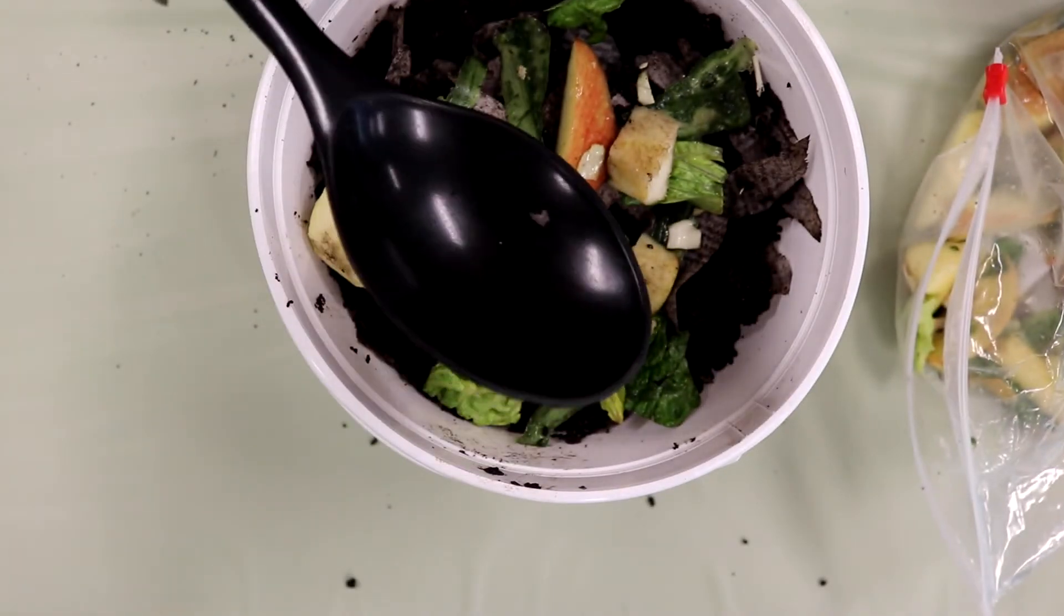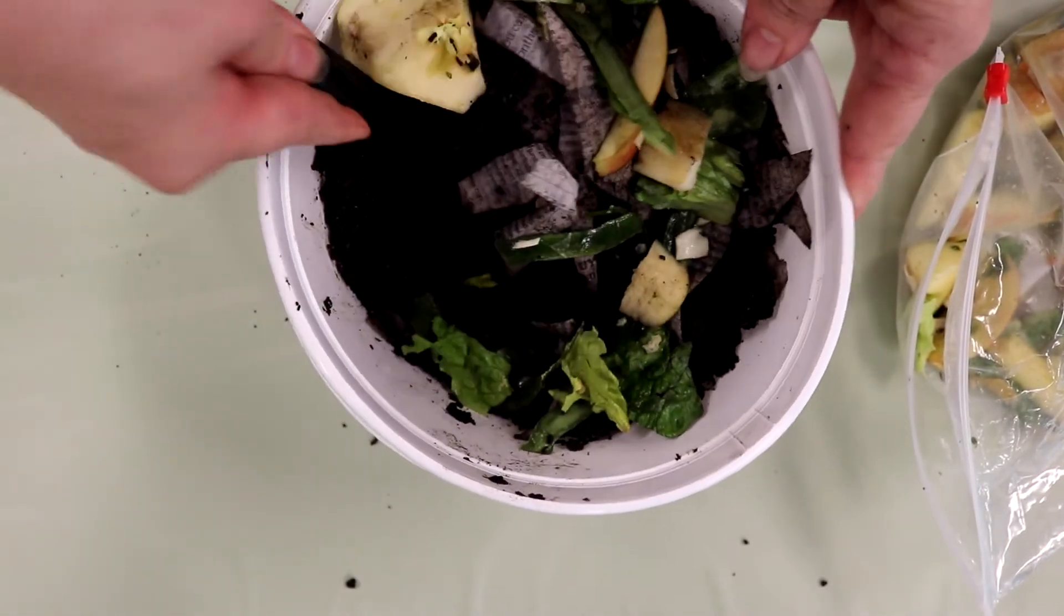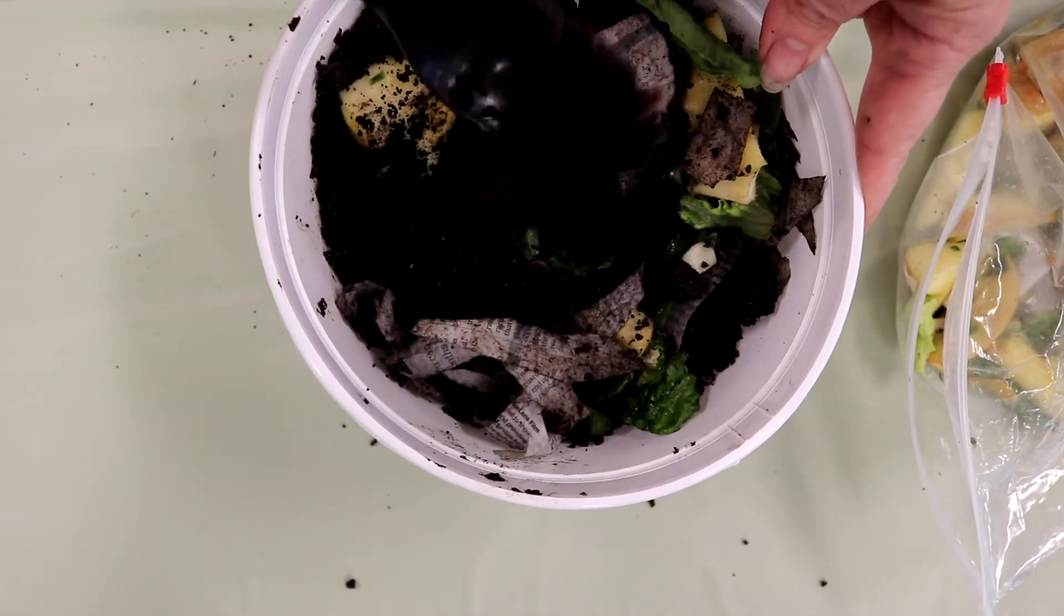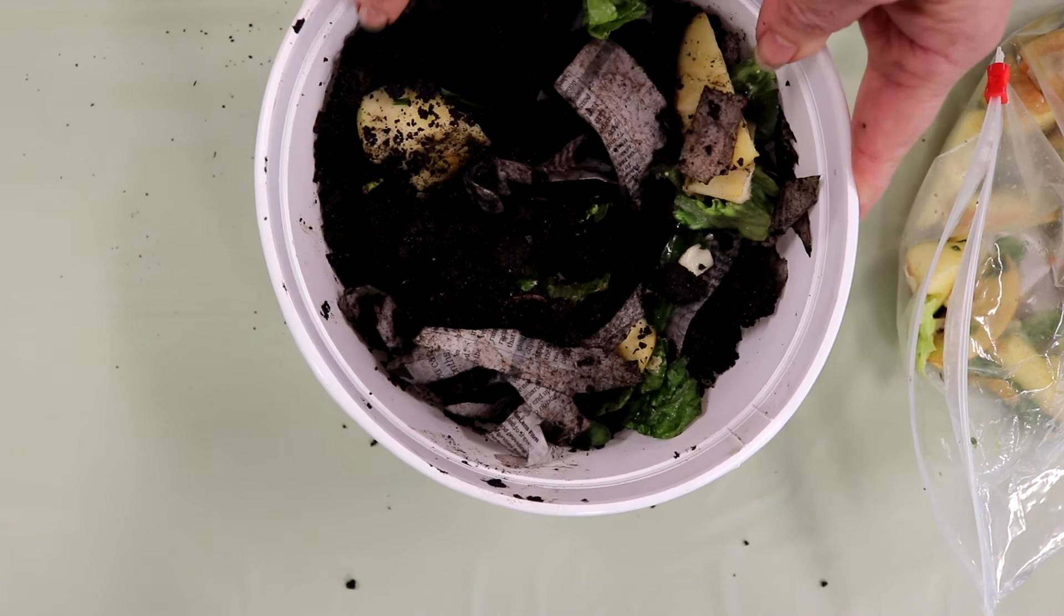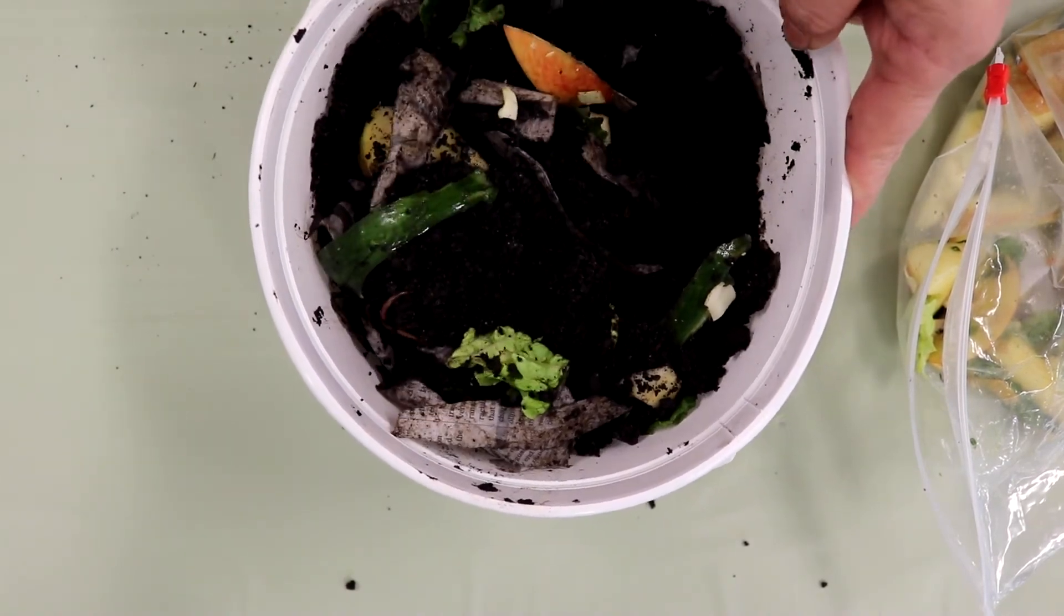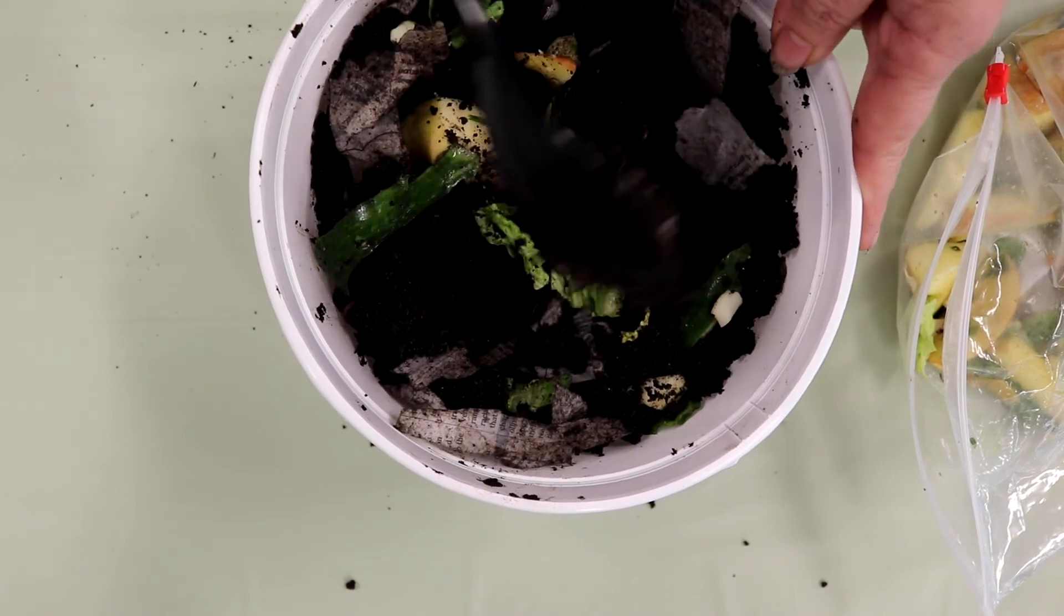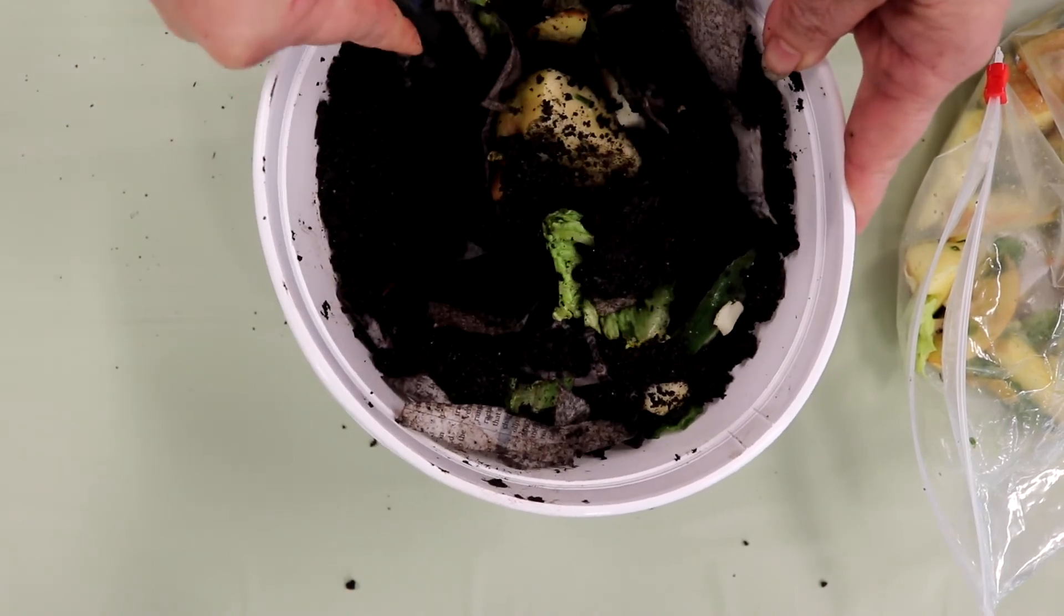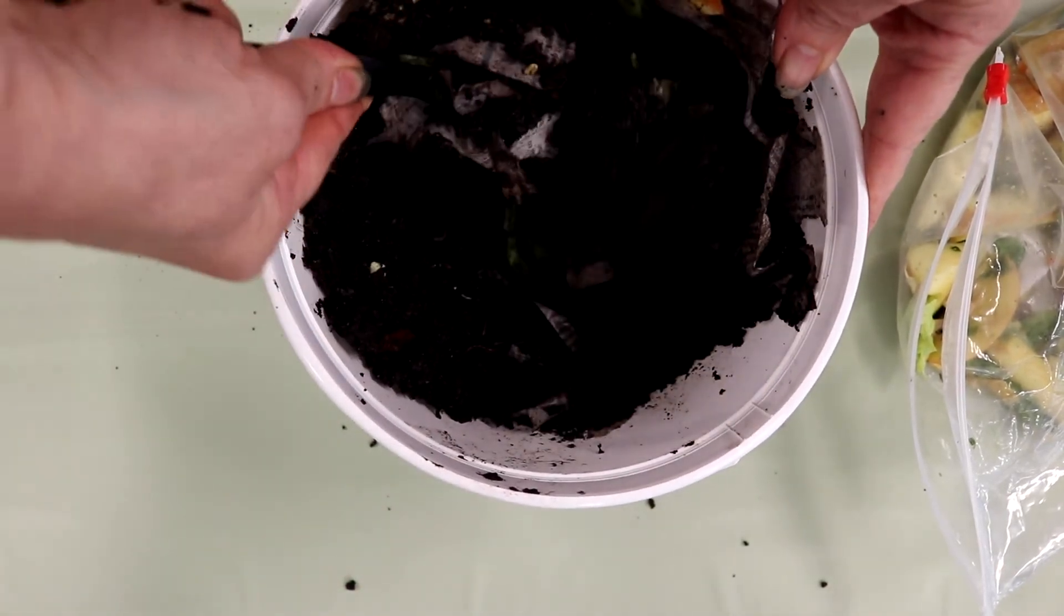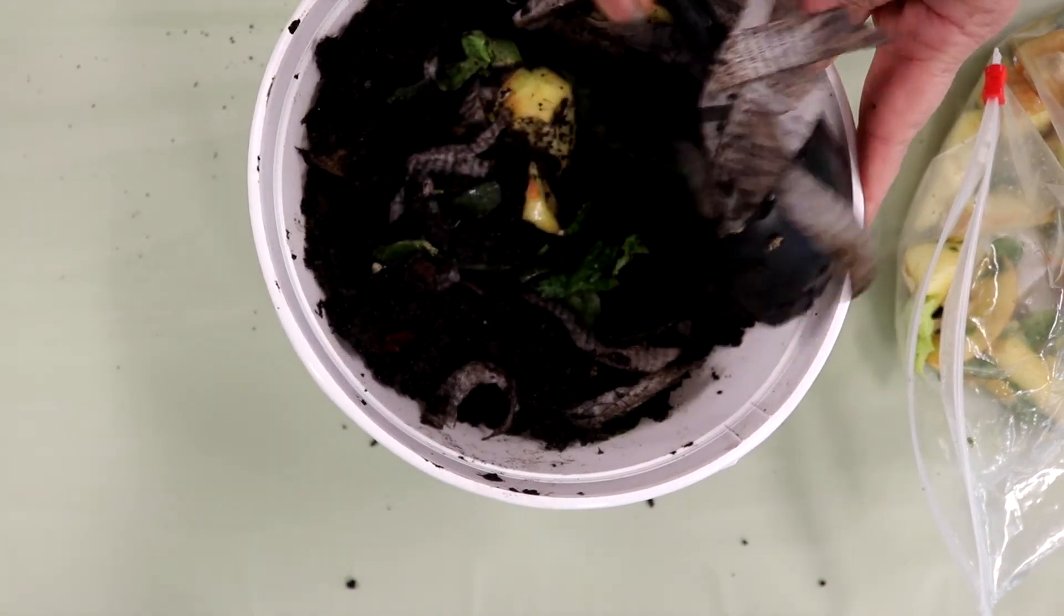Now you need to use a large spoon to turn the dirt over several times a week. This will help add some air and oxygen to your worm farm, which the worms need. In time, the worms will turn the scraps of food and paper into rich soil, perfect for your garden.